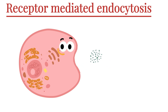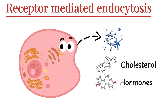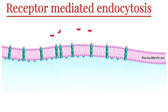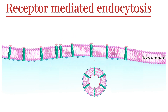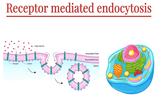Receptor-mediated endocytosis is the most selective form of endocytosis. Instead of randomly taking things in, the cell specifically targets and absorbs only certain molecules, like cholesterol, hormones, or vitamins. The cell membrane has special receptor proteins shaped to fit only specific molecules, like a lock and key. When the right molecule, called a ligand, binds to its receptor, it triggers the membrane to fold in, forming a vesicle. Once inside, the material is sorted just like in general endocytosis — useful parts are used and the rest is broken down. This process is highly efficient, used when the cell needs something very specific and doesn't want to waste energy on random sampling.